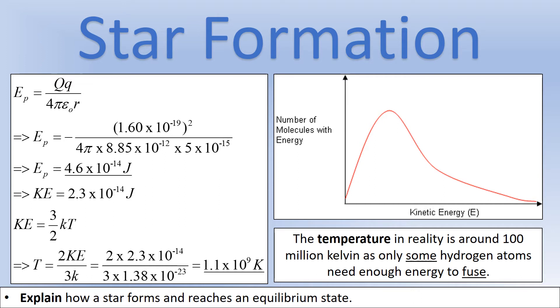As there are two hydrogen nuclei fusing, each of them would have to have 2.3 times 10 to the minus 14 joules of kinetic energy. We can calculate the kinetic energy of a gas particle using its temperature. In this case we can work out what temperature we need for the hydrogen nuclei to have enough kinetic energy. And we can see that it's 1.1 billion Kelvin for the average hydrogen particle to have enough kinetic energy to fuse.